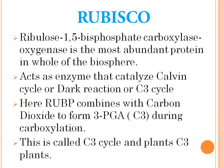First one is Rubisco. Rubisco is ribulose 1,5-bisphosphate carboxylase oxygenase. It is the most abundant protein in the whole biosphere. It acts as an enzyme that catalyzes the Calvin cycle, or dark reaction, or C3 cycle. In the Calvin cycle, RuBP — ribulose 1,5-bisphosphate — combines with carbon dioxide to form 3-PGA, that is 3-phosphoglycerate, which has 3 carbons, during the carboxylation reaction. Since it has 3 carbons, this cycle is known as the C3 cycle and such plants are called C3 plants.